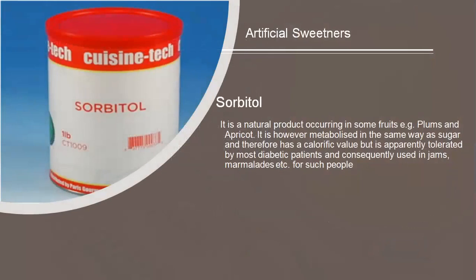Under artificial sweeteners, the first one is sorbitol. It is a natural product occurring in some fruits, for example plums and apricots. It is however metabolized in the same way as sugar and therefore has a calorific value, but is apparently tolerated by most diabetic patients. It is mostly used in jams, marmalade, and similar products for such people.